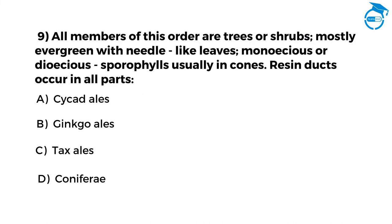All members of this order are trees or shrubs, mostly evergreen with needle-like leaves, monoecious or dioecious, sporophylls usually in cones, resin ducts occur in all parts. Option A: Cycadales. Option B: Ginkgoales. Option C: Taxales. Option D: Coniferales.